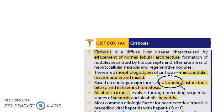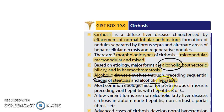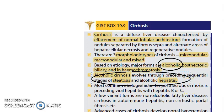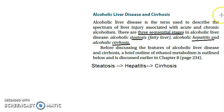Alcoholic cirrhosis evolves through three sequential stages: steatosis (fatty liver), hepatitis (inflammation of the liver), and lastly cirrhosis. That is what we are going to look at in this video.